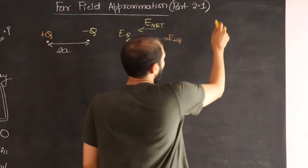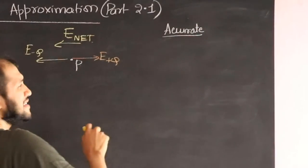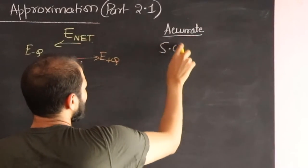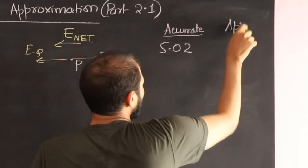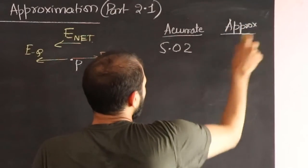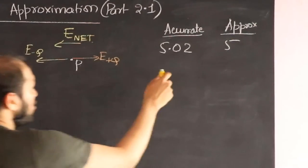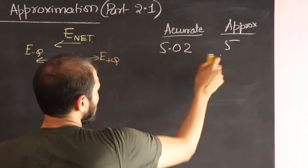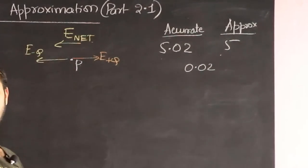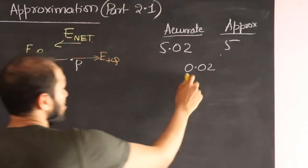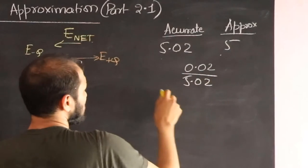Imagine that the accurate value is, let's say, 5.02. And let's say you approximate it to 5. The error in this case is very tiny. The error would be, the difference over here is 0.02. And if you want to calculate the relative error, you divide by the original number. The actual number is 5.02. So that is our relative error.